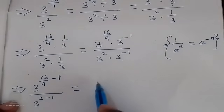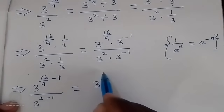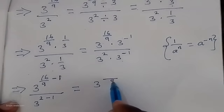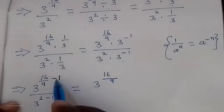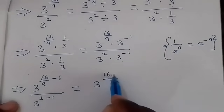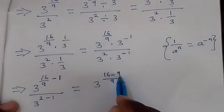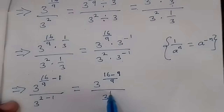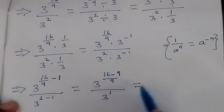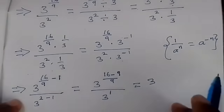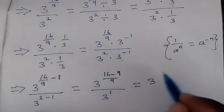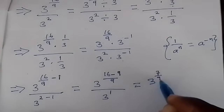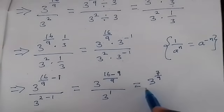By taking the LCM, which is 9, we have 16 minus 9 as the exponent, over 3 raised to power 1. This reduces to 3 raised to power 7 over 9, over 3.